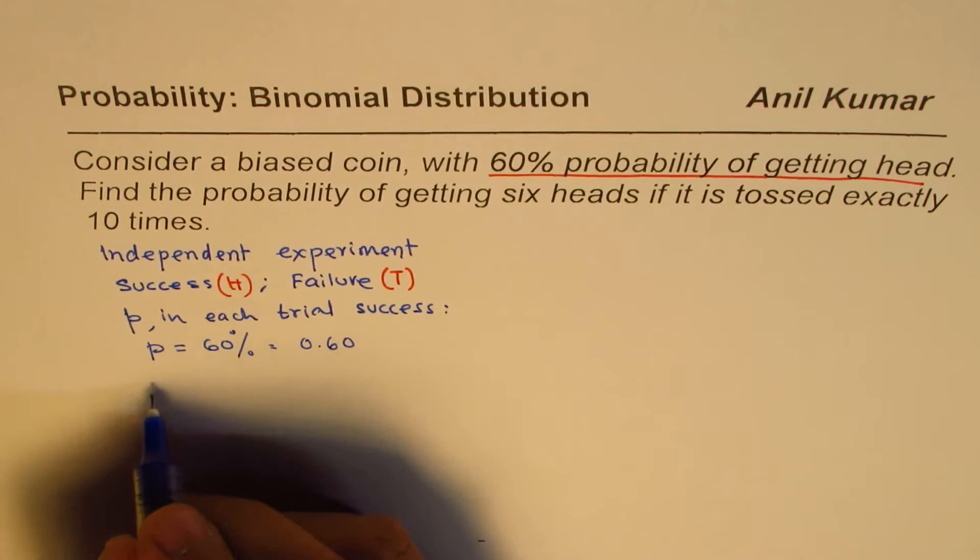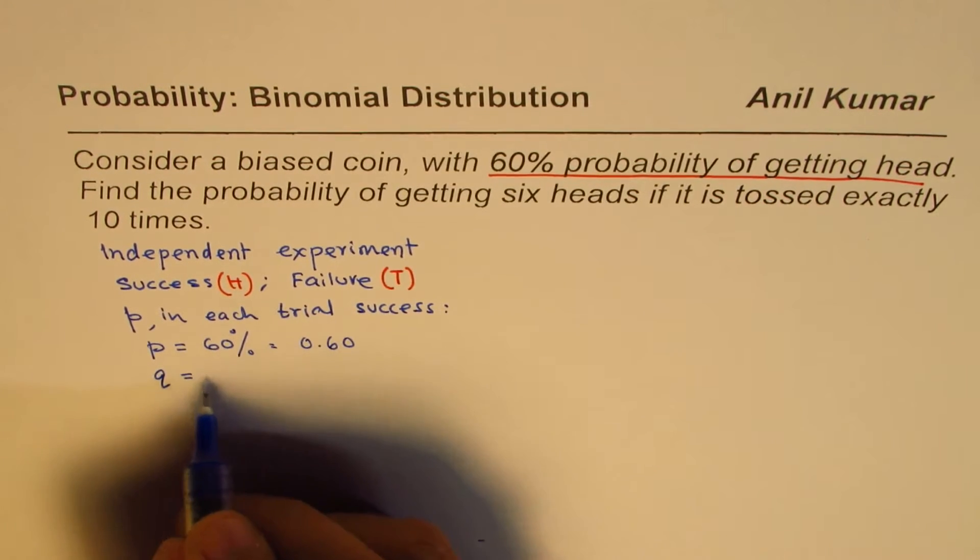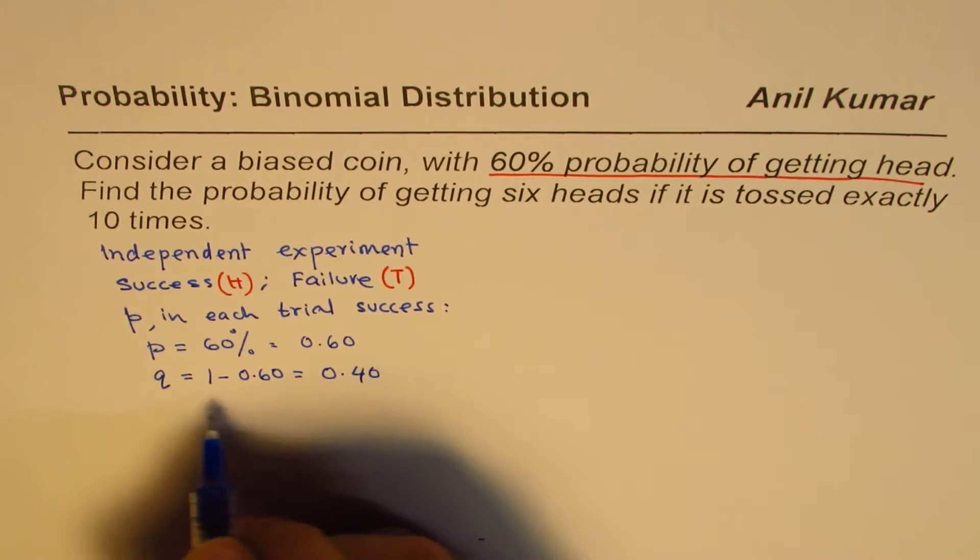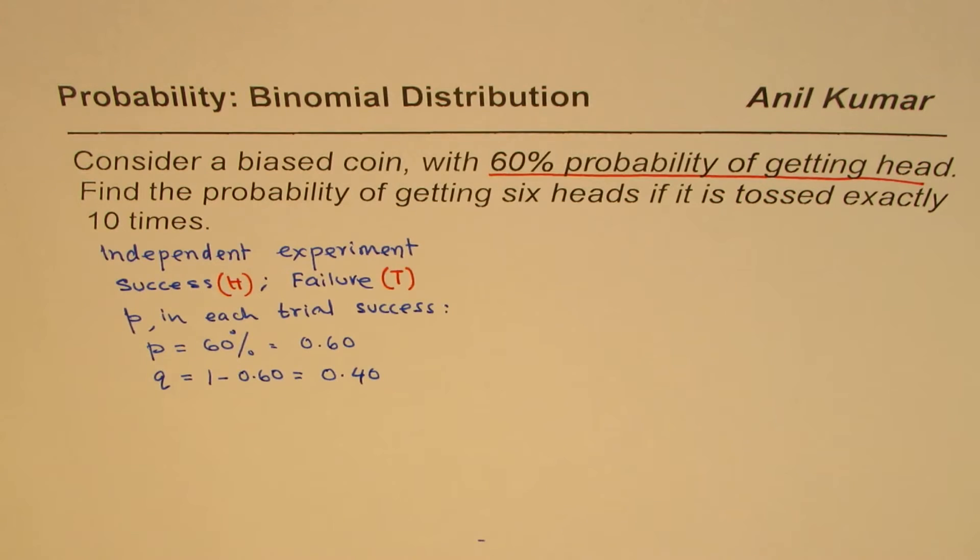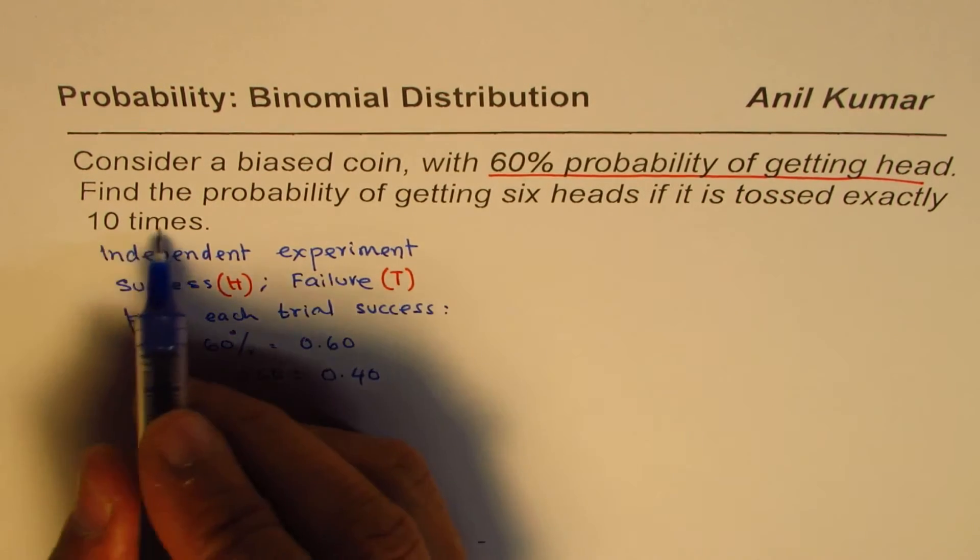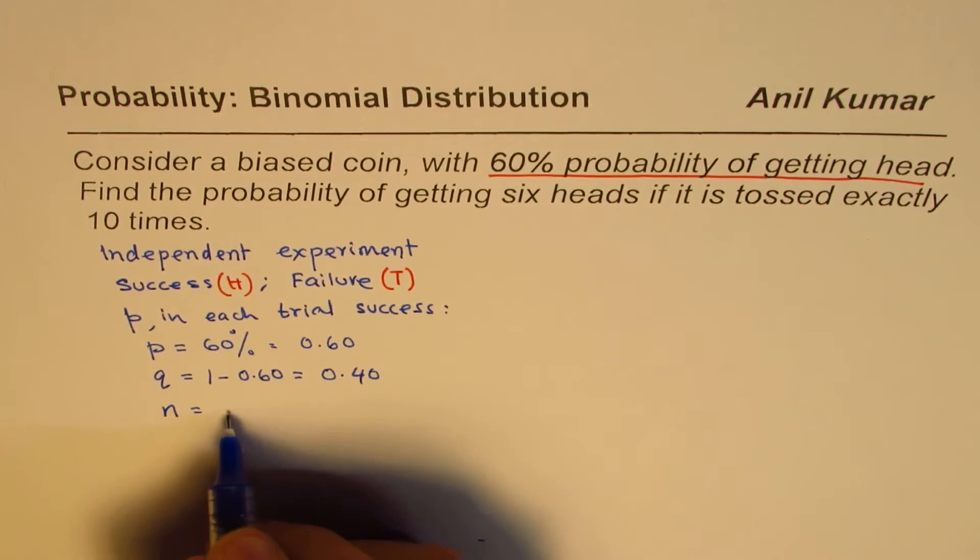Now, what is the probability of failure? Which is Q, will be 1 minus 0.60, so that is 0.40. How many trials do we have? Exactly 10 times. So n, the number of trials, is 10.